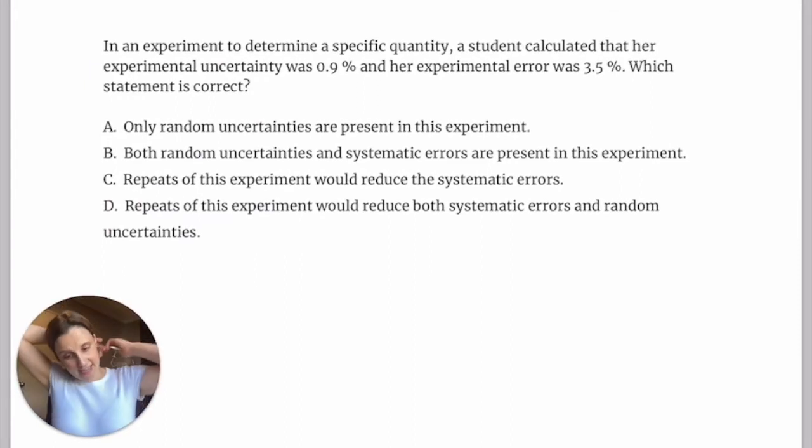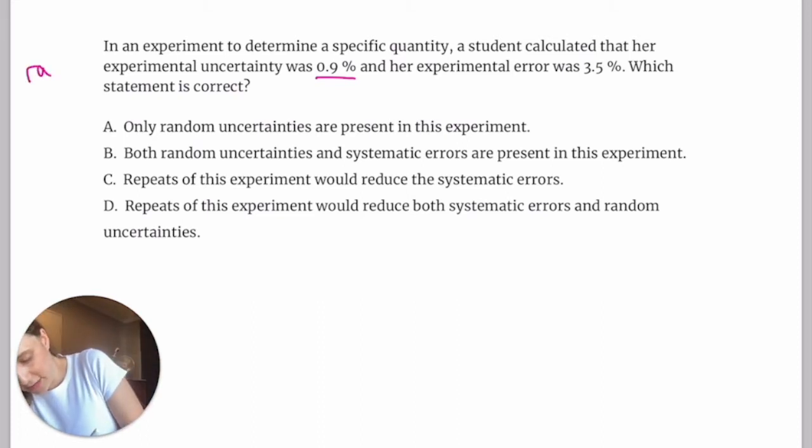Let's have a look at another one. So this says, in an experiment to determine a specific quantity, a student calculated that her experimental uncertainty was 0.9%. So when we're talking about experimental uncertainty, this is the random uncertainty caused by measurement. She's been able to calculate it. So that tells me that it's caused by the measurements, the equipment themselves.